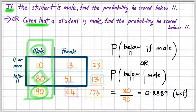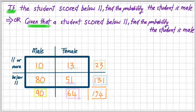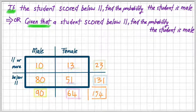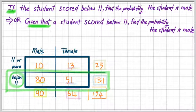If that doesn't make sense, I suggest you go back to the last video and revise your ideas of probability. But if you're happy with this, let's carry on. So we're going to ask another question. This time, if the student scored below 11, find the probability the student is male. Or: given that a student scored below 11, find the probability the student is male. These two sentences may look similar to what we did on the previous slide, however there are subtle differences. Now we're looking at below 11 only, and I've blocked out that part of the table.